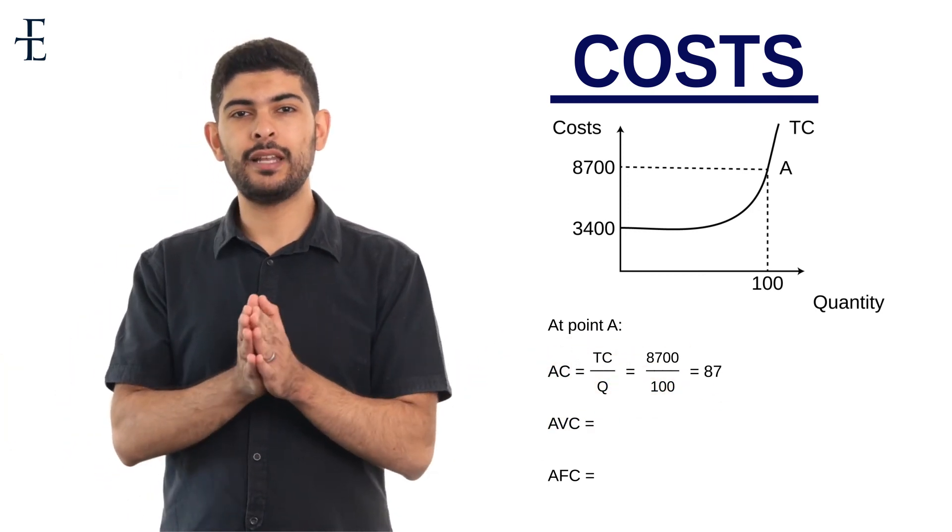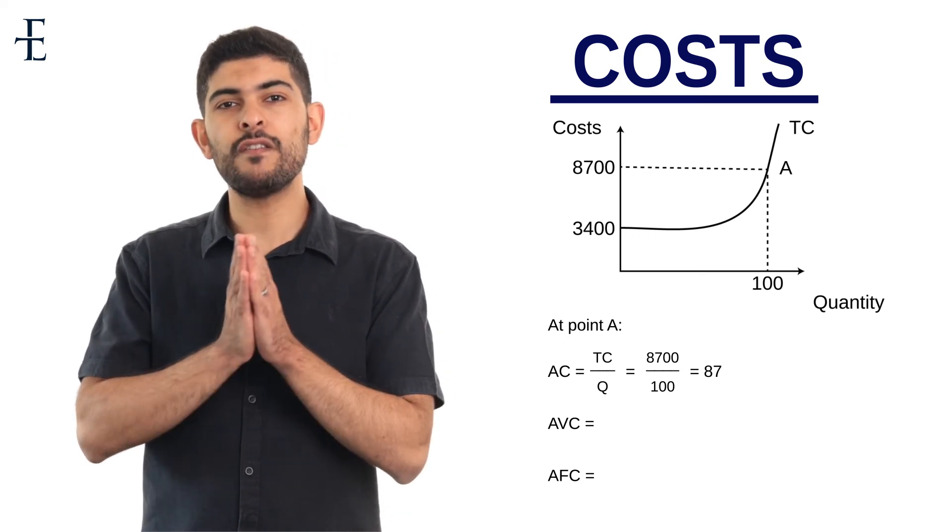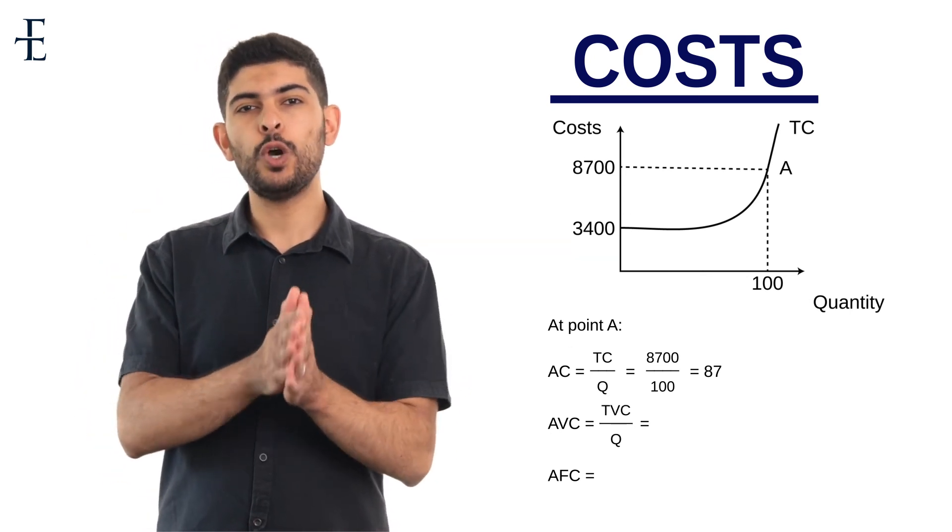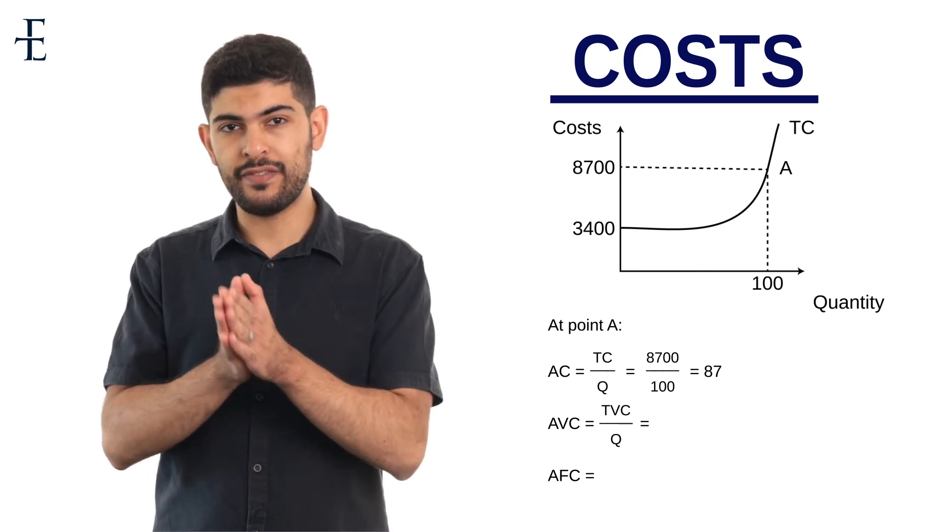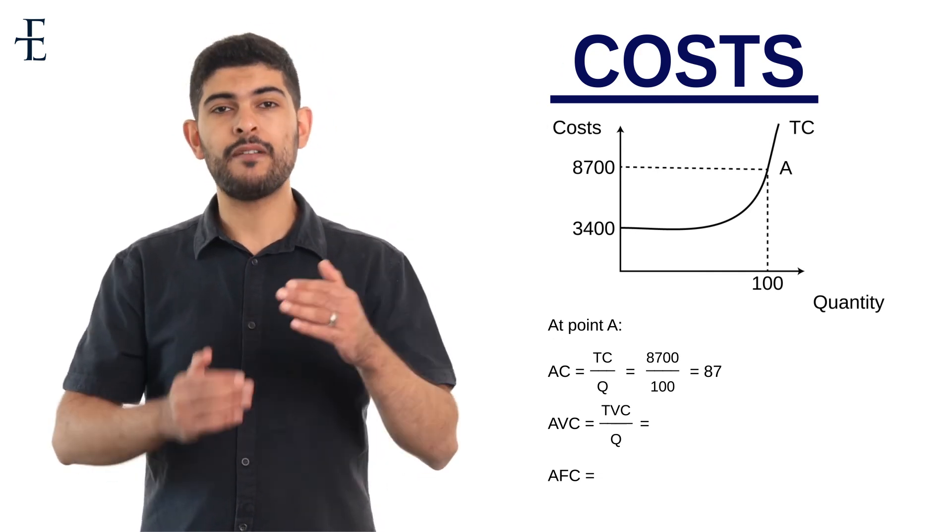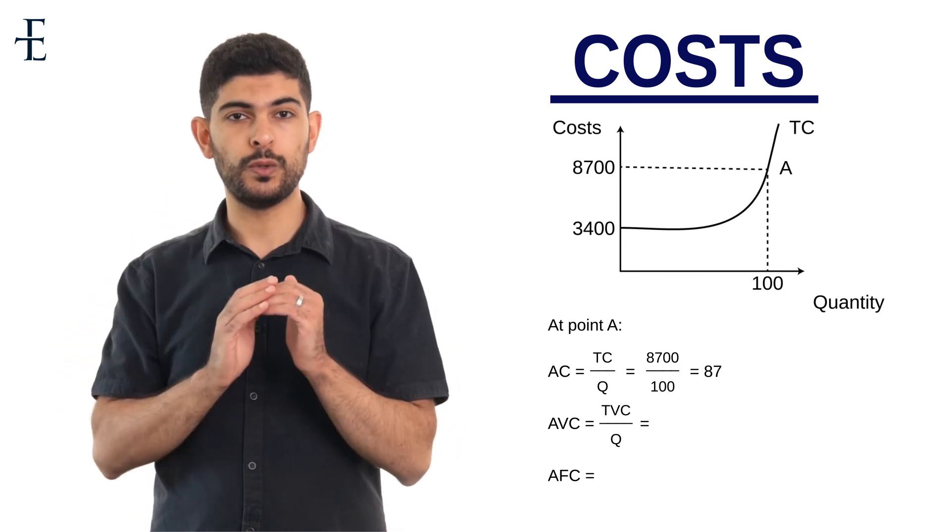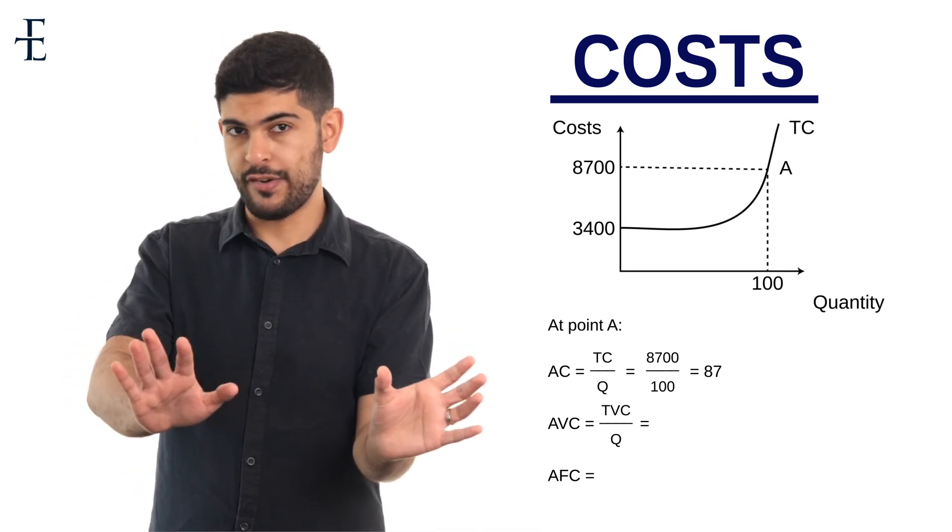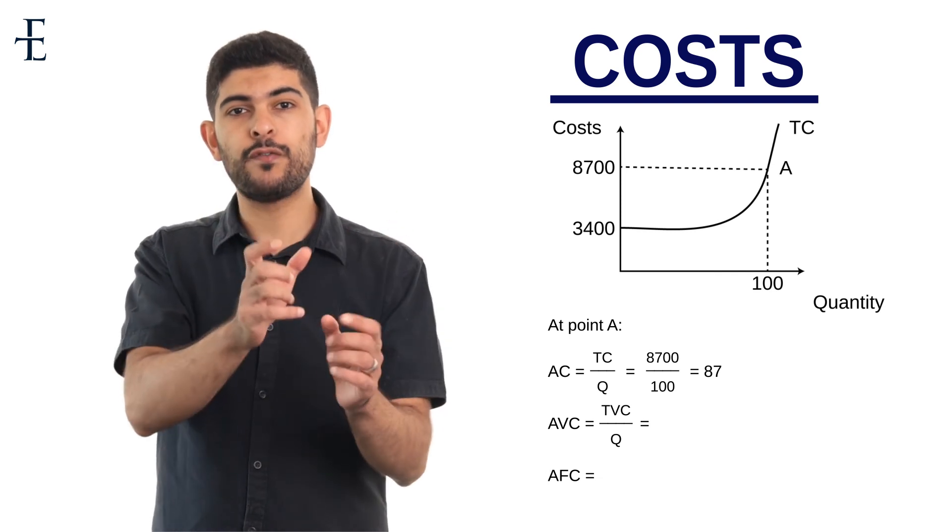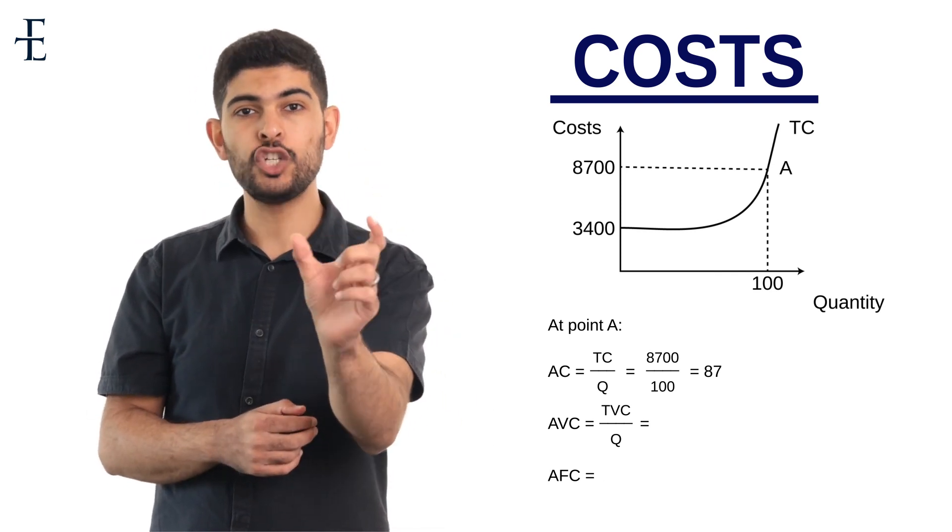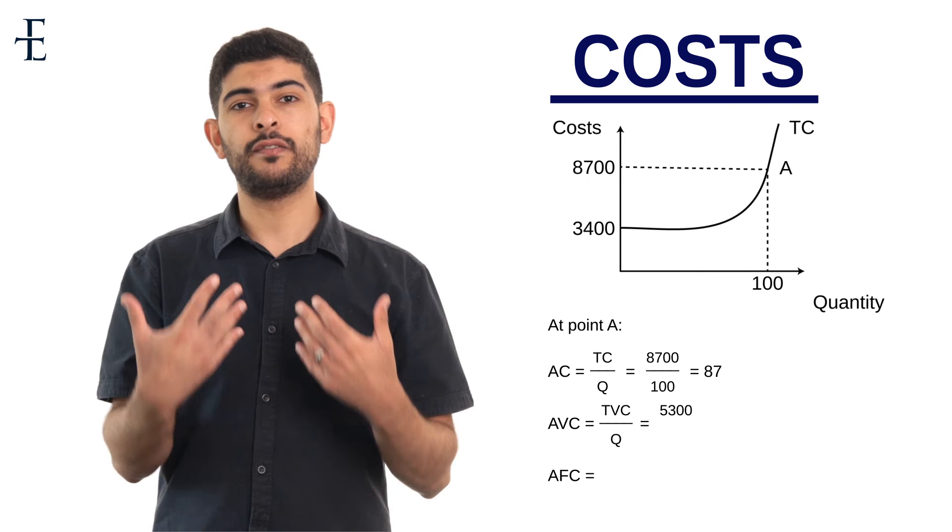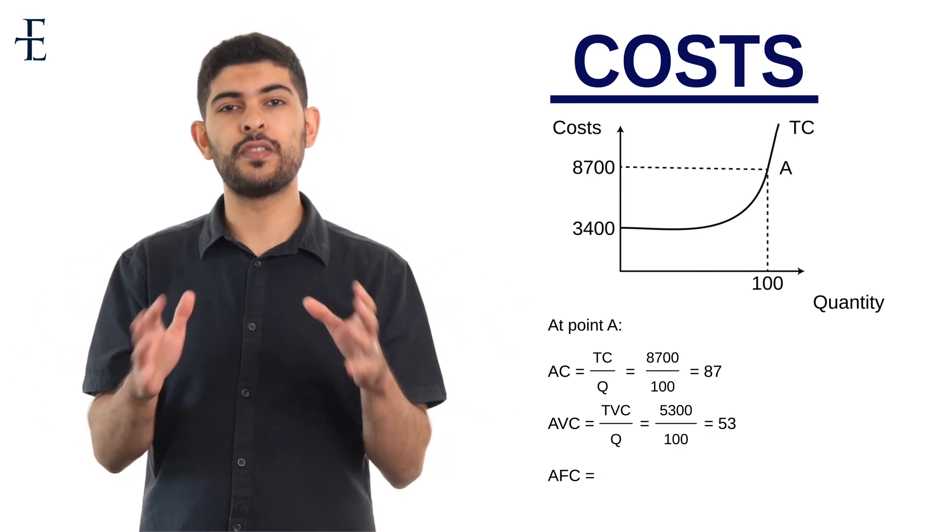The second thing that we need to calculate, I'd argue, is the hardest of the three questions. Average variable cost. What is your average variable cost? Well, think about it. If I know that my total cost at point A is $8,700, and if I know that my fixed cost is $3,400, my variable cost is therefore the difference between those two. Because I know that my $3,400, I pay that irrespective of how much output I produce. But I, as a total, have a cost of $8,700. Therefore, my variable cost is simply $8,700 minus $3,400, which gives me $5,300, and I divide that by 100 again to get 53. Nice and easy.